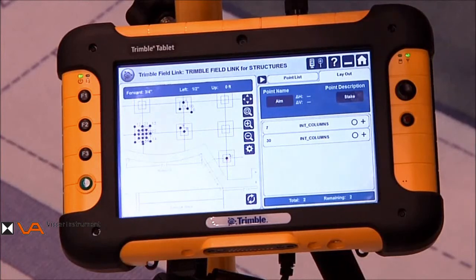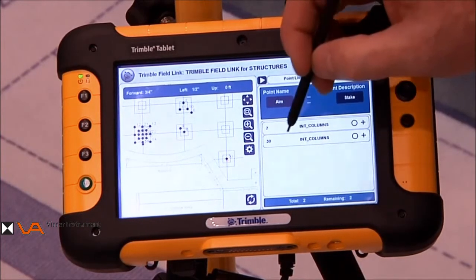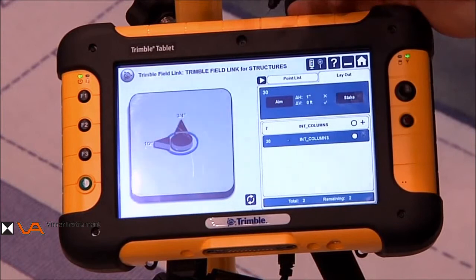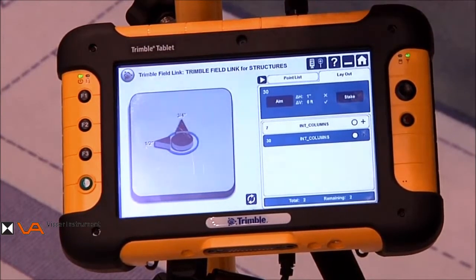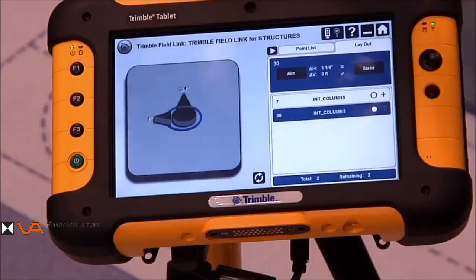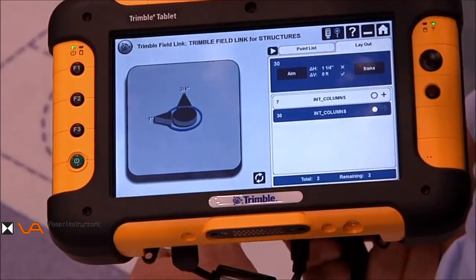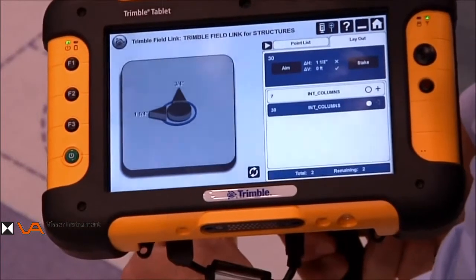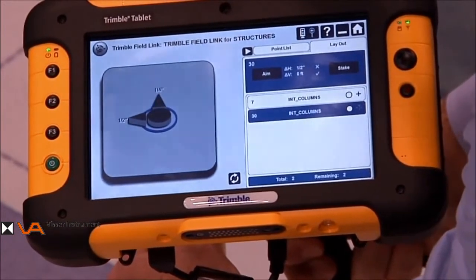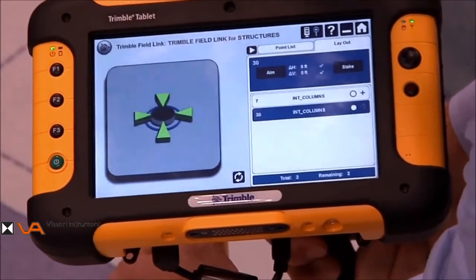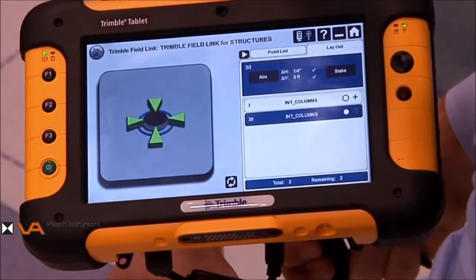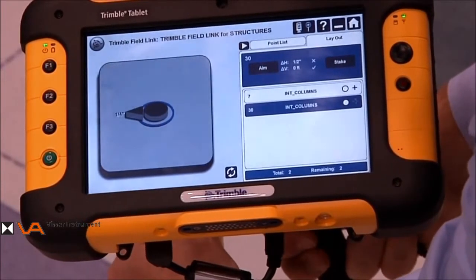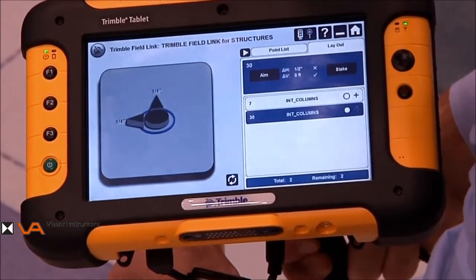The next step in the process is to select a point we want to lay out. We're going to choose number 30, and you'll note that the display comes up in a new bullseye view. This gives us corrections in both forward, back, and left, right. We can move our prism, and you'll notice that we have to go forward three-quarters of an inch, and we need to go left an inch. Eventually, we get to a point where we're within our tolerance, and you'll notice that we see a nice green, very visible display to show what our tolerance is.